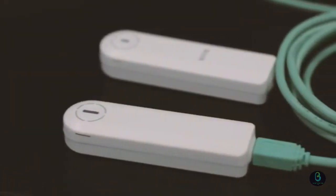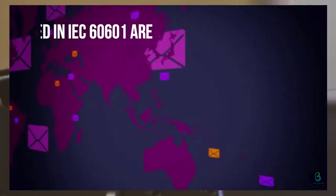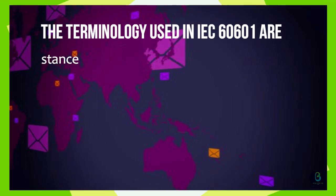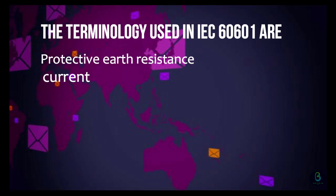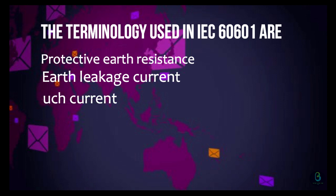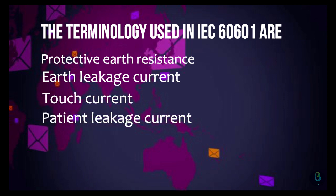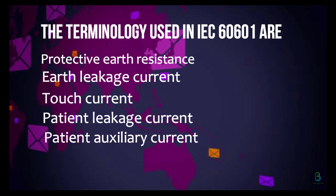The terminology used in IEC 60601 are Protective Earth Resistance, Earth Leakage Current, Touch Current (Formally Enclosure Leakage Current), Patient Leakage Current, Patient Auxiliary Current, and Mains on Applied Part.